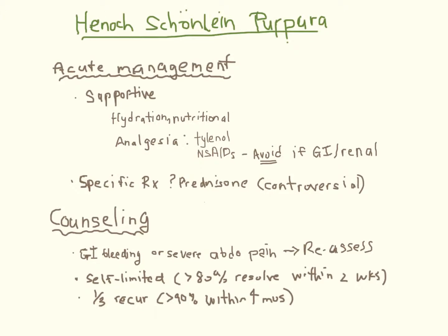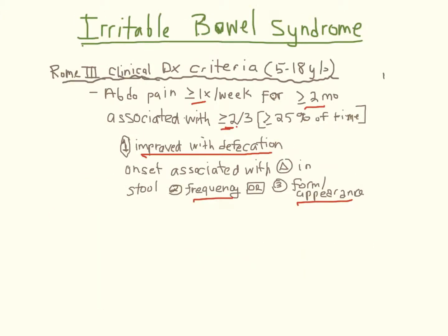Finally, irritable bowel syndrome: IBS is common, especially in adolescents, and can present with acute episodic abdominal pain that is quite frequent. Ask about previous episodes, in particular if they have been associated with alterations in bowel movement frequency and/or consistency, as well as if the pain is relieved after defecation. These are important for diagnosis, but also help guide management depending on whether pain, diarrhea, or constipation is the most bothersome.